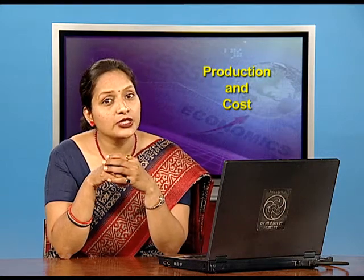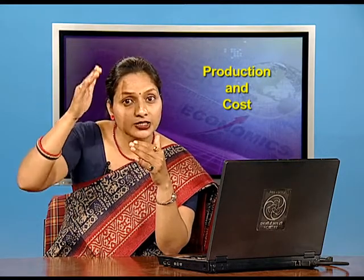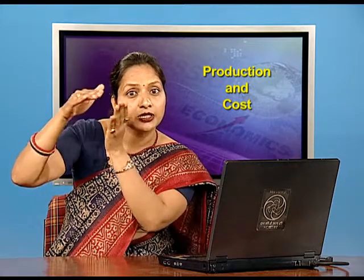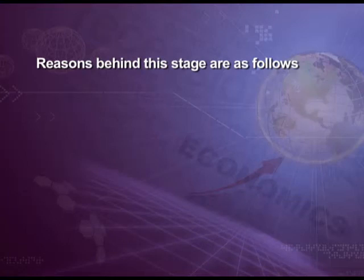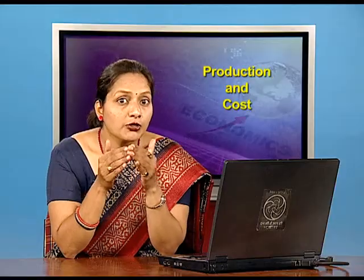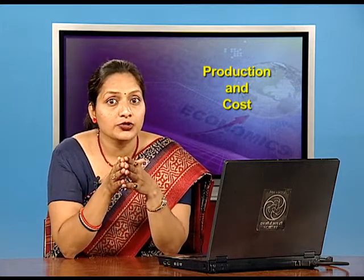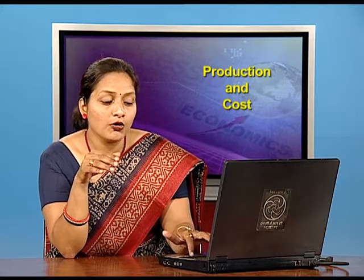Stage 3 is known as the law of negative returns. In this stage total product declines, marginal product becomes negative, and average product is diminishing but remains positive. This stage is called the stage of negative returns since the marginal product of the variable factor is negative. The reason is that the quantity of the variable factor becomes too excessive relative to the fixed factor, so they come in each other's way and total output falls. The solution is that a reduction in units of the variable factor can increase total output.